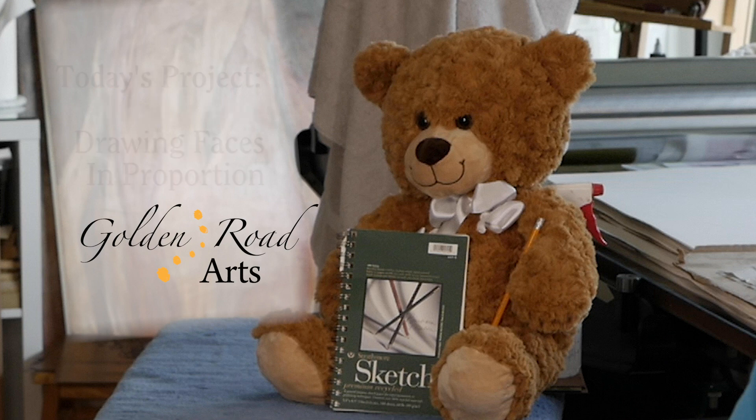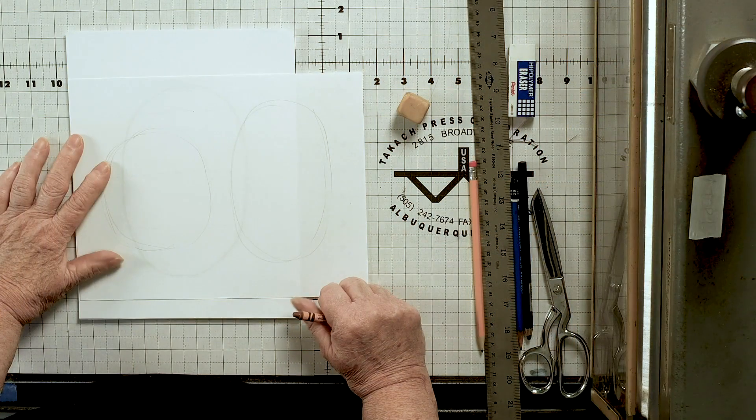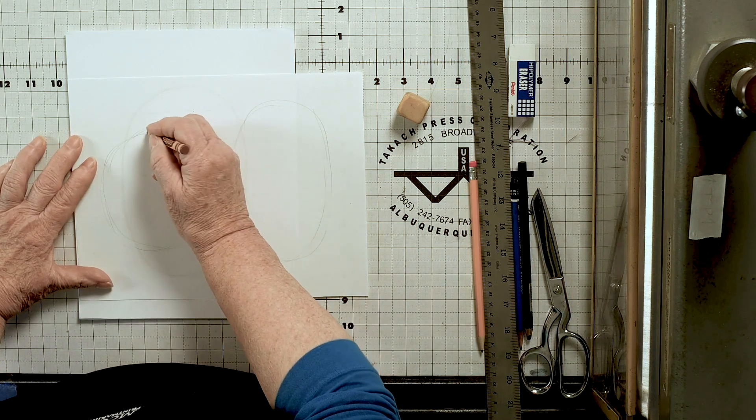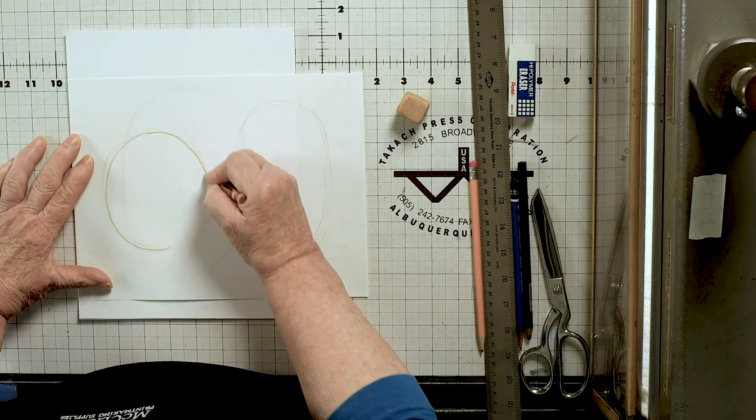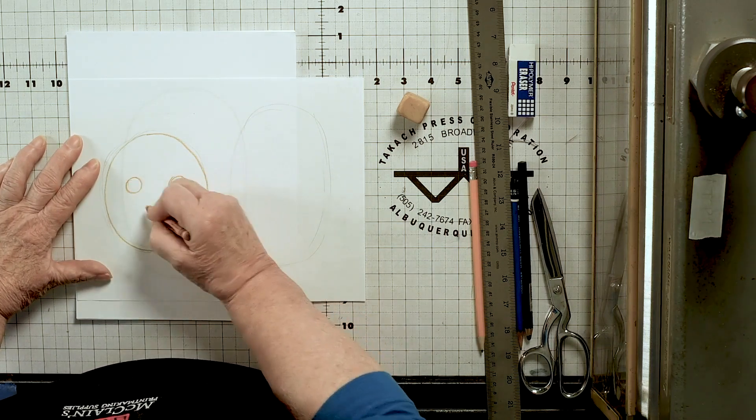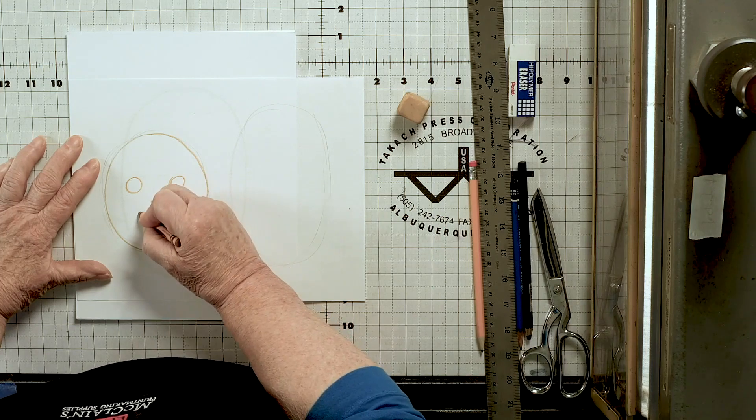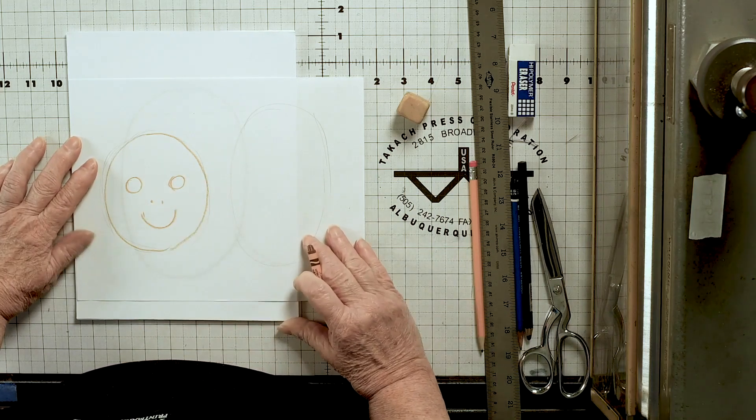Today I'm going to show you how to draw a face. When you started school and you drew a face, you just took a crayon and you made a circle like this. And then you put some eyes in the circle, maybe a couple little spots for the nose and you made a nice big smile. But it doesn't look very much like a person. So what I'm going to do today is teach you how to make it look a little bit more like a person.